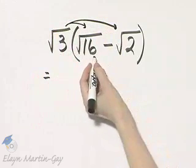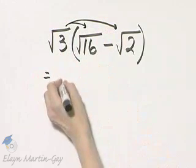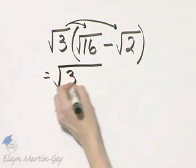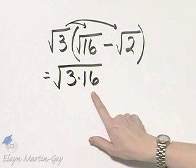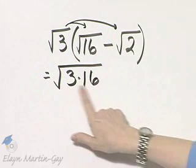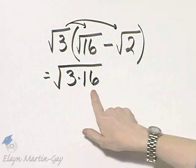What is the square root of 3 times the square root of 16? It is the square root of 3 times 16. And I'm not going to multiply right now because simplifying radicals, it's more helpful to me to have it in some sort of factored form.